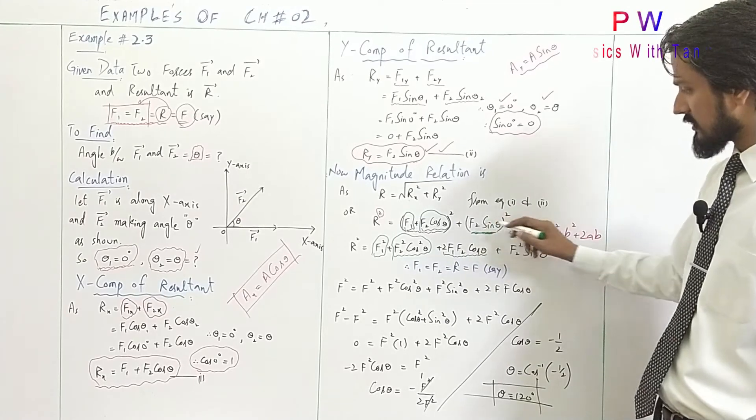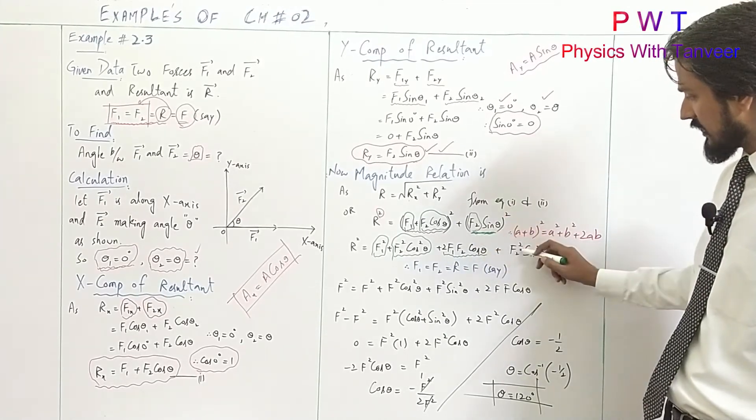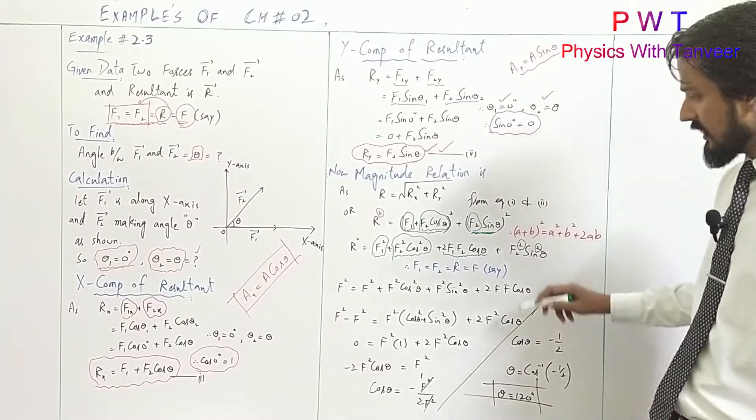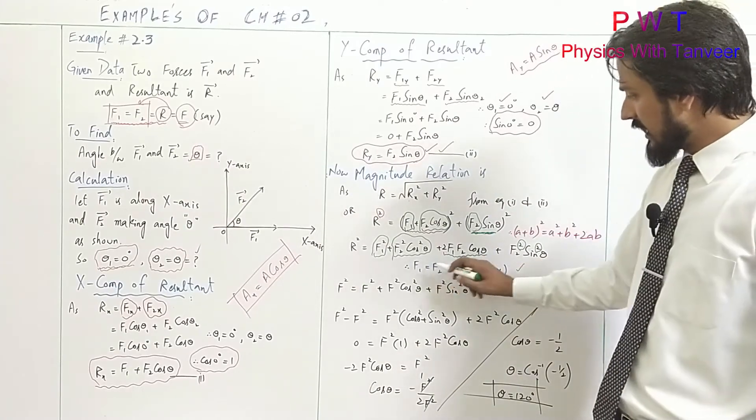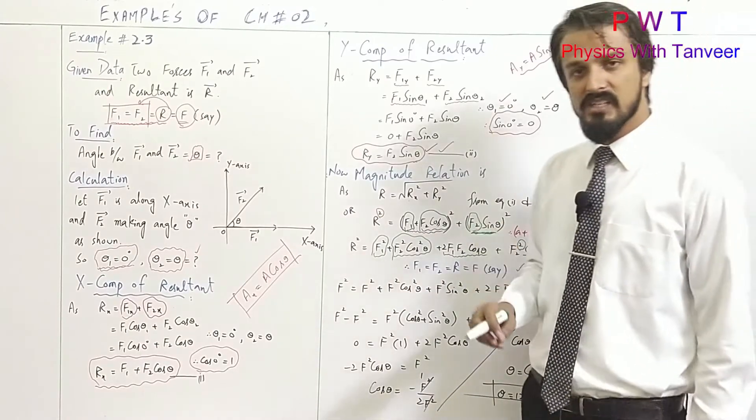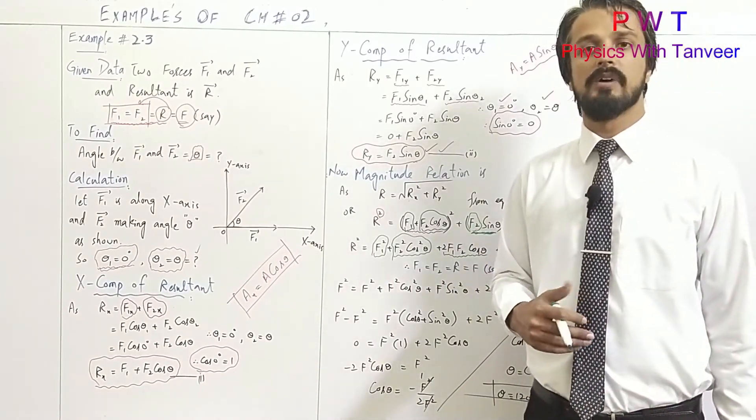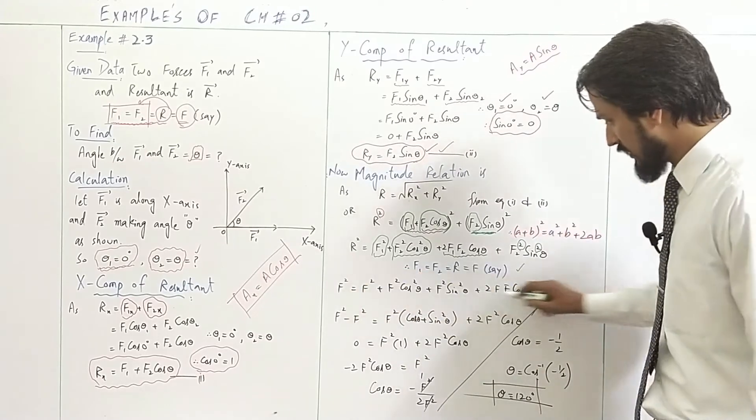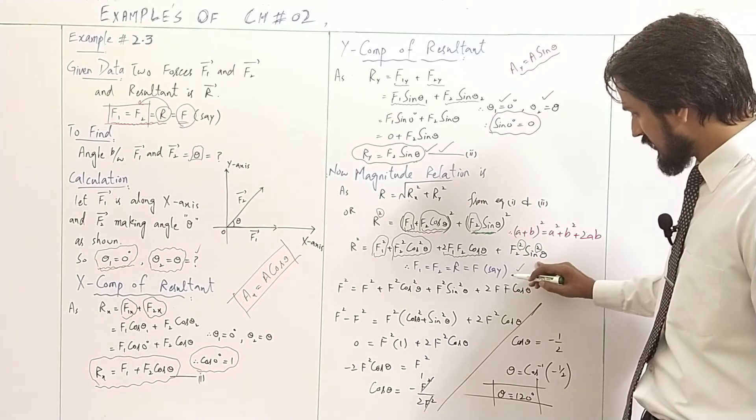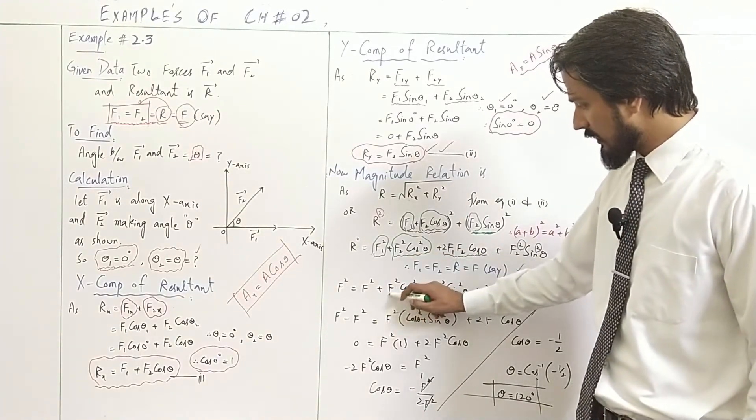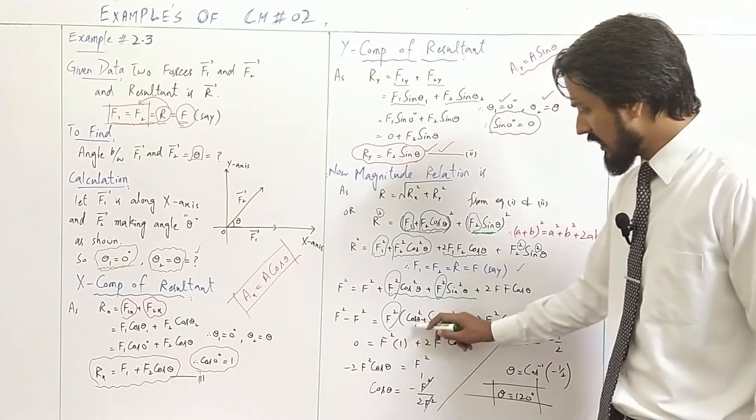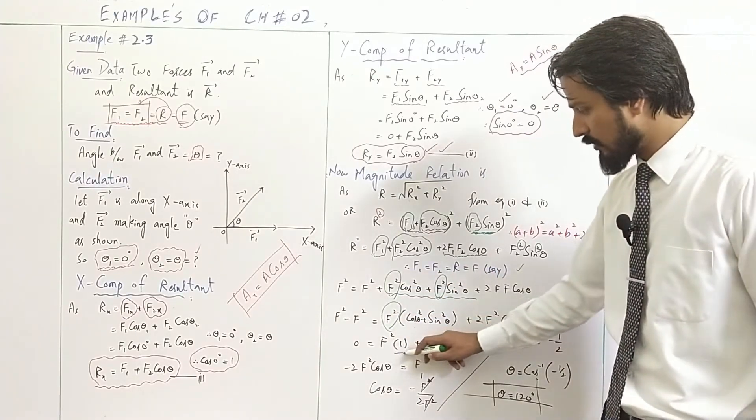Since F1, F2, and R are all equal to F, we put F everywhere in the equation. F squared on the left, F squared times (cos squared plus sine squared) plus other terms on the right. Cos squared plus sine squared equals 1. F squared cancels, leaving 2F squared cos theta.